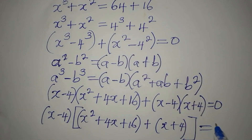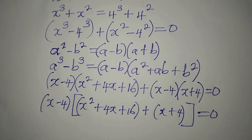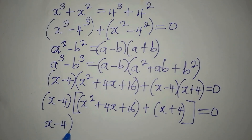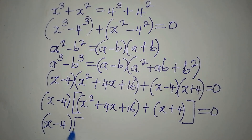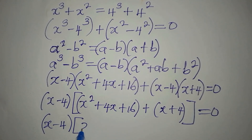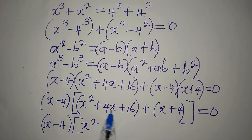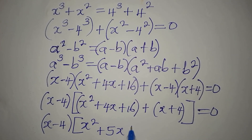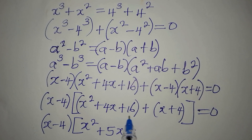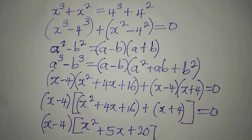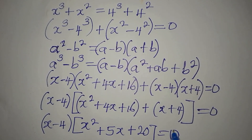We equate to zero. Since (x minus 4) is a common factor, we factor it out. Opening the remaining bracket: x squared plus x squared gives x squared, 4x plus x gives 5x, and 16 plus 4 gives 20. So we have (x minus 4)(x squared plus 5x plus 20) equals zero.